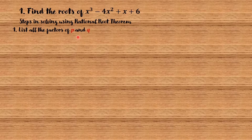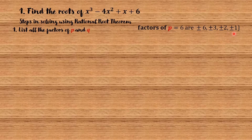The value of p is the constant term, which is 6, and the value of q is the leading coefficient, which is equal to 1. So the factors of p are positive and negative 6, positive and negative 3, positive and negative 2, and positive and negative 1. The factors of q are positive and negative 1.